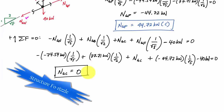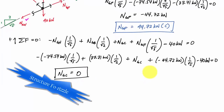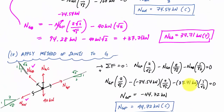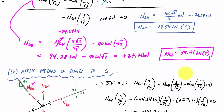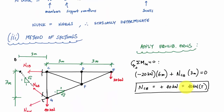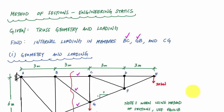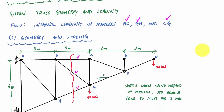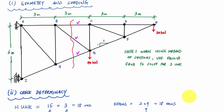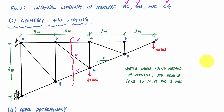NGC equals zero — it's a zero force member. Not for nothing though — an interesting result. To summarize: NGC equals zero, NGF equals 44.72 kilonewtons in compression, NCB equals 40 kilonewtons in tension, and NGB equals 37.71 kilonewtons in tension. Hopefully this was a useful and interesting example for method of sections and basic truss analysis. Structure free.